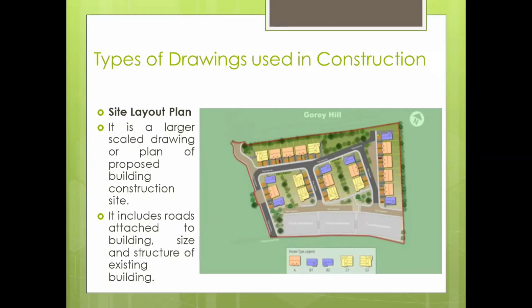A site layout plan is nothing but a scaled drawing — a larger scaled drawing — or a plan of the proposed building construction site. It includes different roads attached to the building, and it indicates or represents different sizes and structures of the existing buildings.